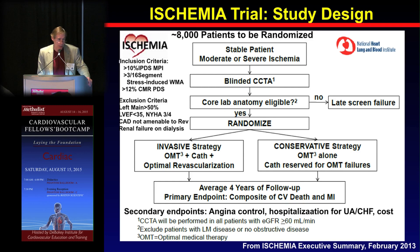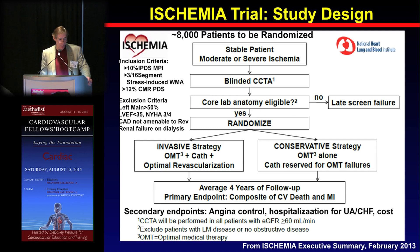There is a trial going on right now called the ISCHEMIA study, which is taking 8,000 patients who have moderate to severe ischemia by nuclear criteria, echo, or CMR and more than 10% ischemic myocardium, who have a blinded CT to rule out no disease or left main disease, and are being randomized to either an invasive strategy with optimal medical therapy plus optimal revascularization versus optimal medical therapy alone. Still recruiting patients — in the next five to seven years we should have results, and maybe we'll finally get at this idea of what is the best way to identify risk and treat patients based on non-invasive imaging. Thanks very much.